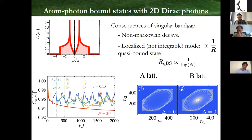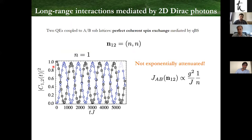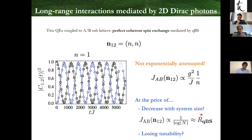The overlap actually decreases with system size but does so very slowly. If you put two emitters, you actually get perfect coherent energy oscillations — they are able to interact — and you can prove that the interactions follow a 1/R decay, so they are not exponentially attenuated. In this sense you get the best of two worlds: you don't get exponential attenuation. The price is that because this overlap with the boundary state depends on system size, eventually in the thermodynamic limit they will not be able to interact properly — but the dependence is logarithmically weak in system size.